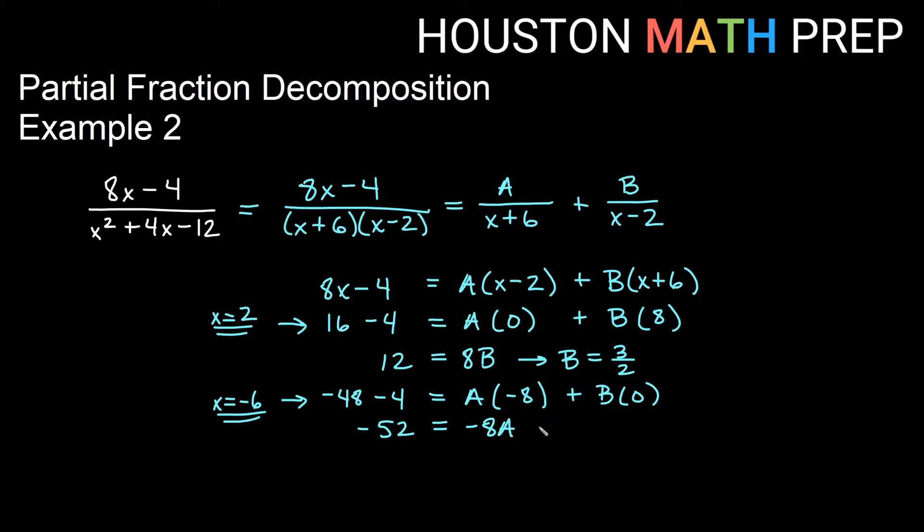we'll get 52 over 8. And when we reduce 52 over 8, that will give us that A is equal to 13 over 2. We've got fractions here. I'm going to go ahead and write these here just as the fractions. So 13 halves was our A, and that would be over x plus 6. And then 3 halves was our B. So if I write 3 halves here over x minus 2.